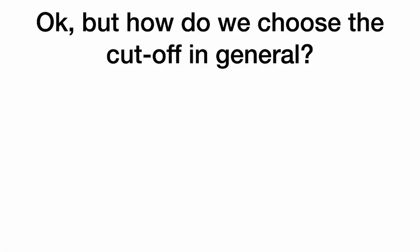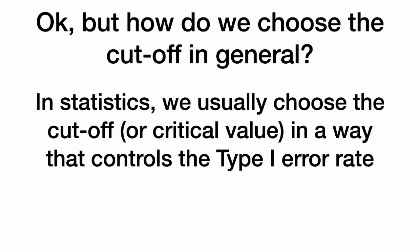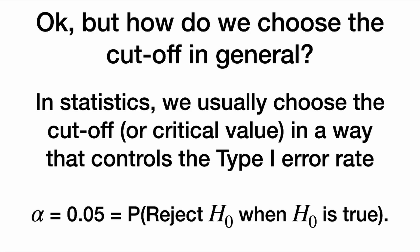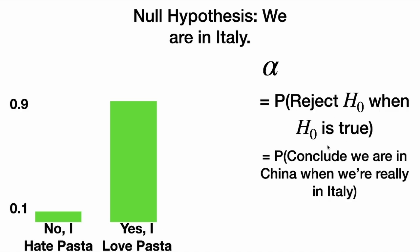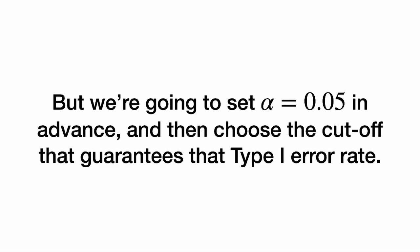How do we choose the cutoff in general? We sort of made an ad hoc rule for rejecting the null hypothesis here based on one person, but usually we're going to collect a lot of data. In statistics, we usually want to choose the cutoff — which we call a critical value — in a way that controls the type 1 error rate. The type 1 error rate is alpha, which is often 0.05, and that's the probability we reject the null hypothesis when the null hypothesis is true. We're going to set alpha equal to 0.05 in advance, and then choose the cutoff that guarantees that type 1 error rate.